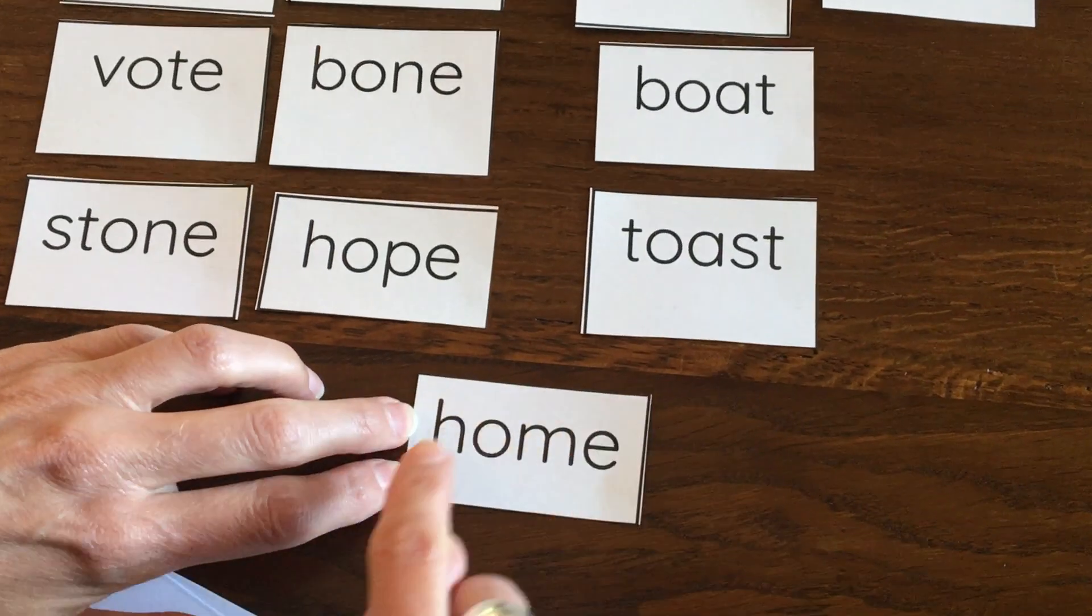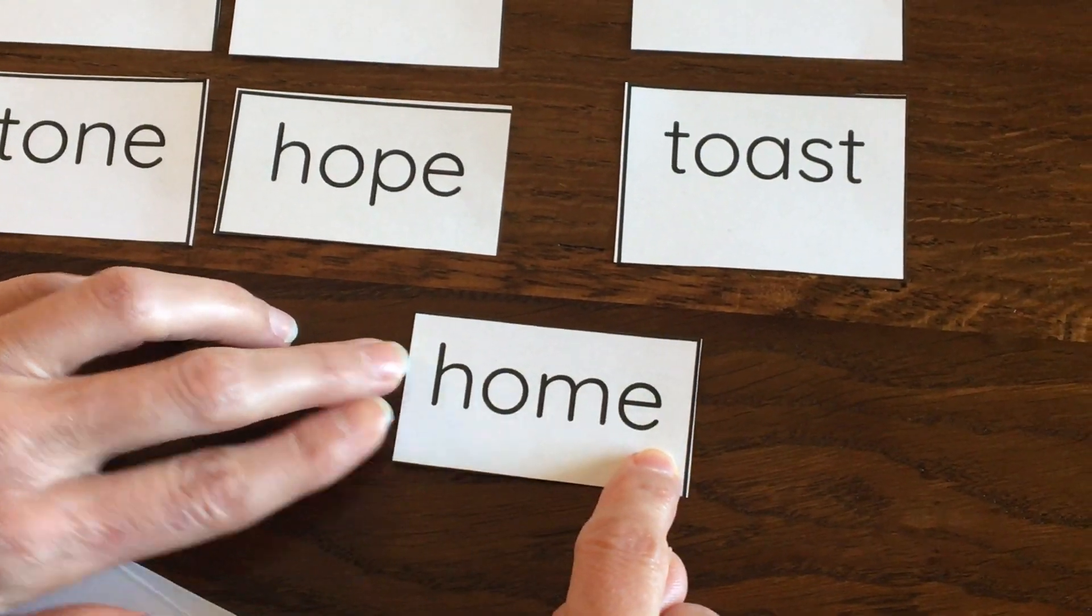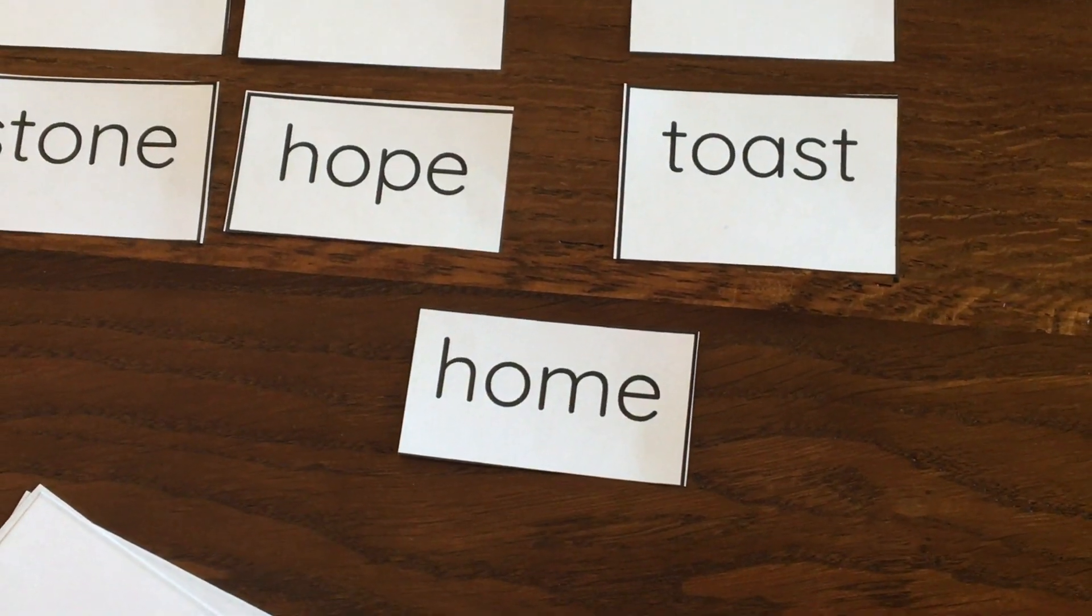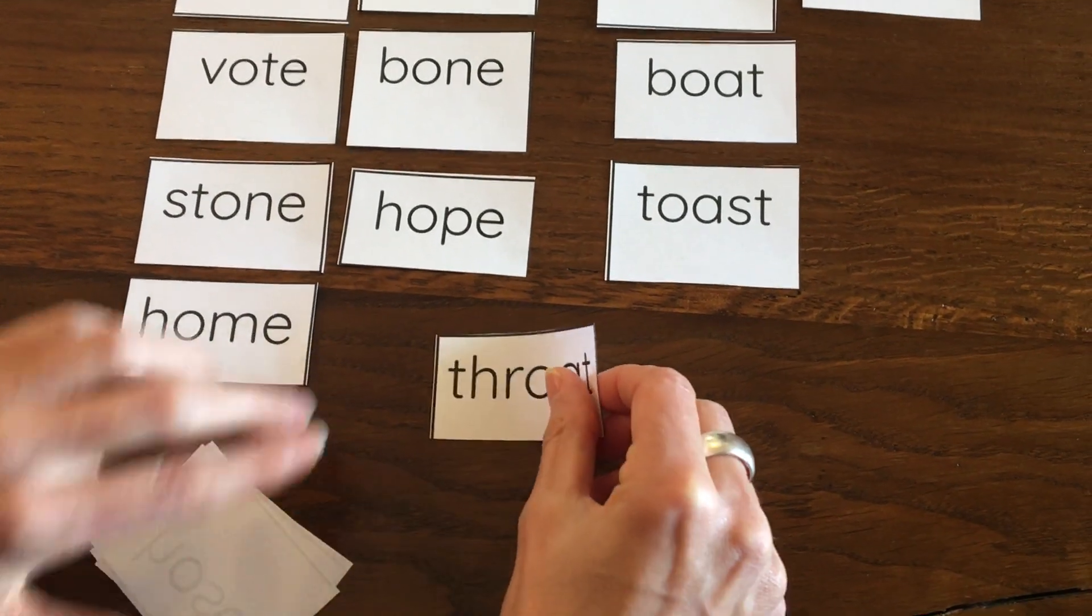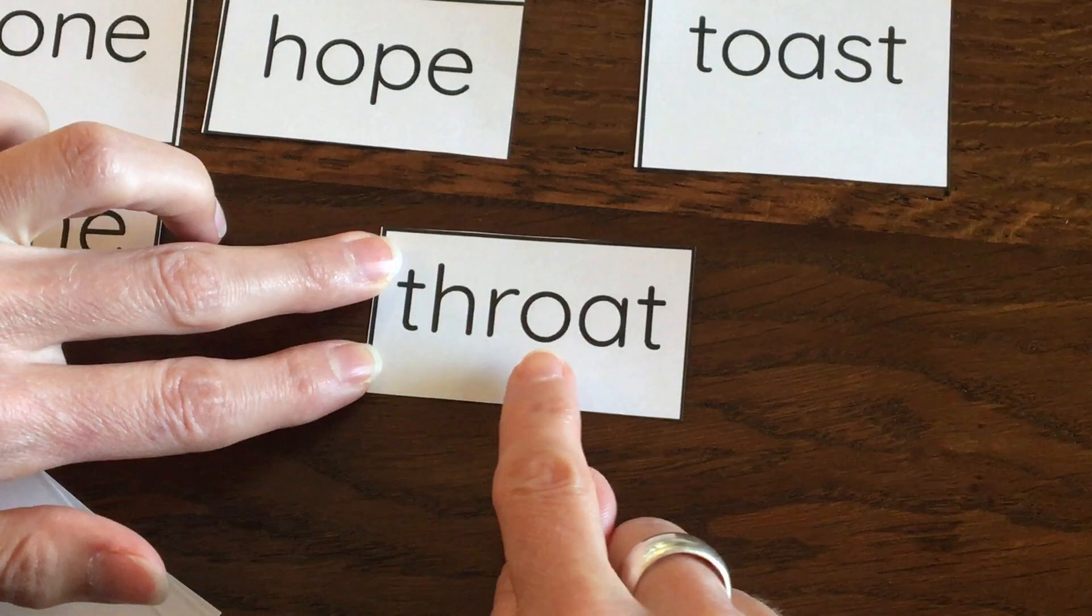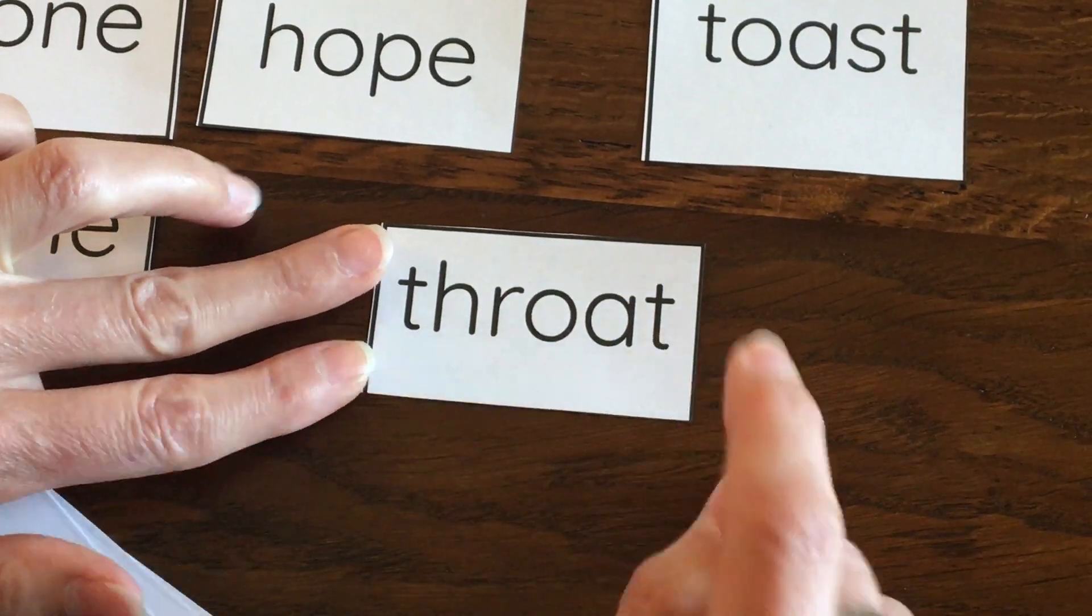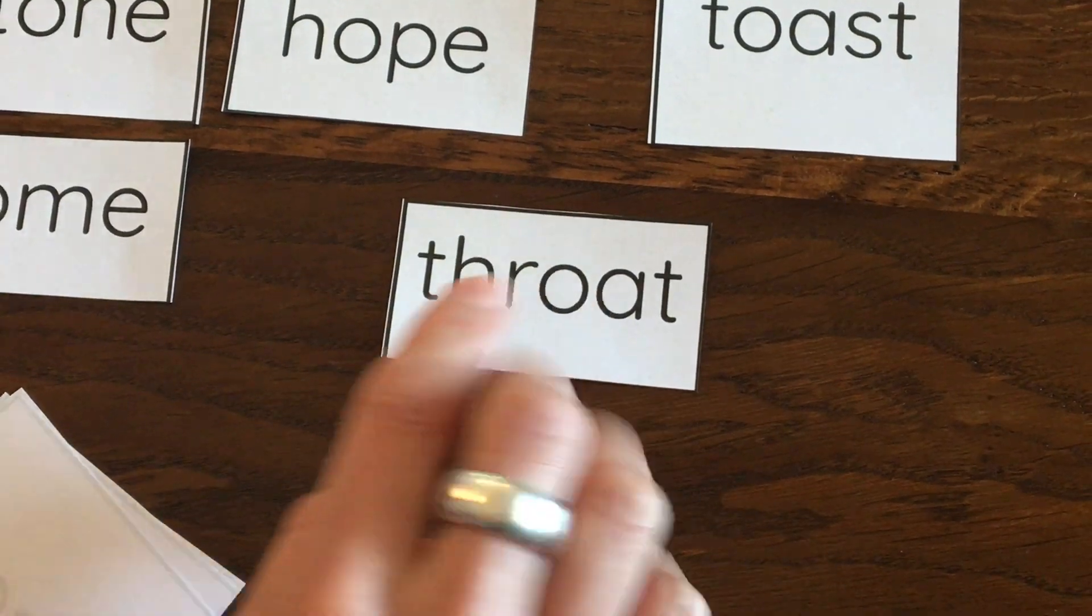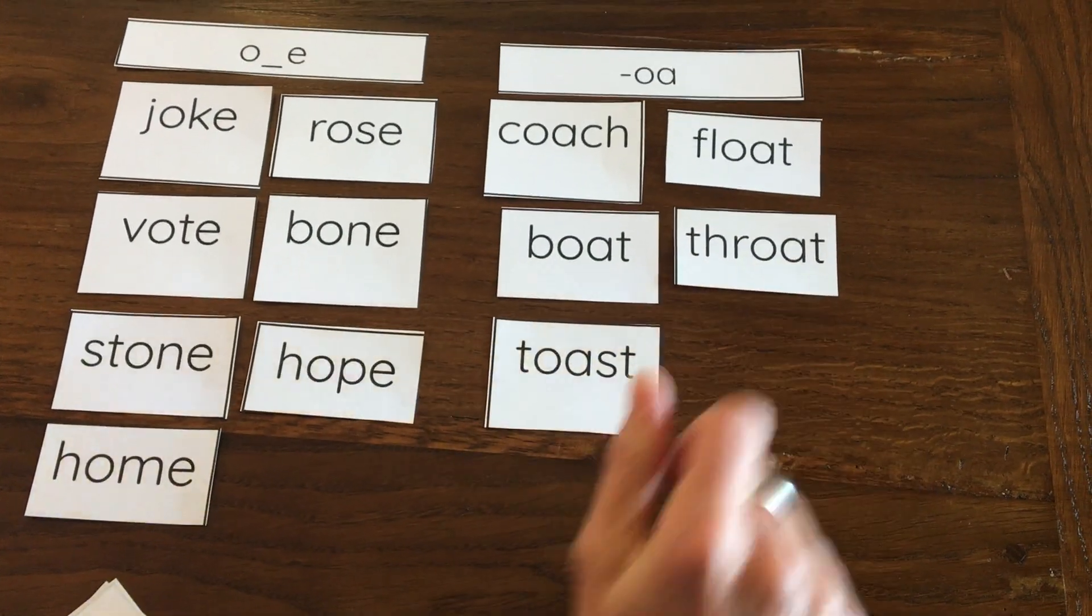Help me. Home. Your home might be a house, might be an apartment. And there's that silent E on the end. Let's keep going. Throat. Sometimes we get a sore throat when we are getting sick. There's that O-A in the middle.